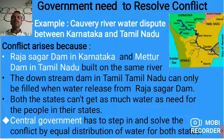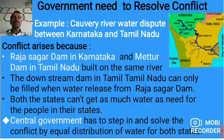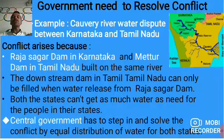The conflict arises because in Karnataka, the water stored through the Rajasagar Dam is used for irrigating land as well as supplying the city of Bengaluru. In Tamil Nadu, the water from the Mettur Dam is used for irrigation of the delta region. When the dispute arises between these two states, the central government steps in for equal distribution of water for both states.